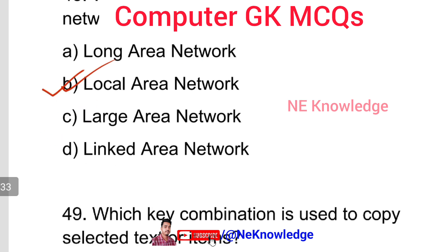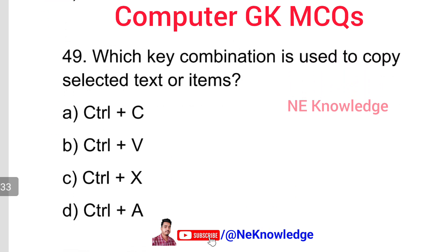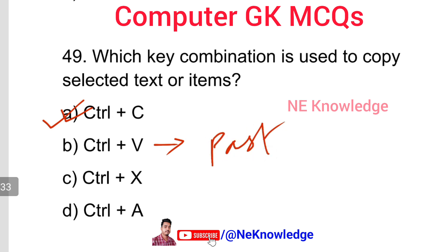Question number 49: Which key combination is used to copy selected text or items? The shortcut key to copy is Ctrl+C. Ctrl+V is to paste, Ctrl+X is to cut, and Ctrl+F is to find. So Ctrl+C is the correct answer.